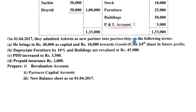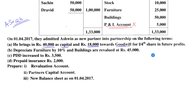In the adjustments, on 1-4-2017 Ashwin is admitted as a new partner — all names are cricketers — into the partnership firm with the following terms. First adjustment: he brings 40,000 as capital and 18,000 as goodwill. This problem is based on Accounting Standard 26 (AS 26). As per AS 26, Ashwin is admitted for a 1/4 share of future profits.